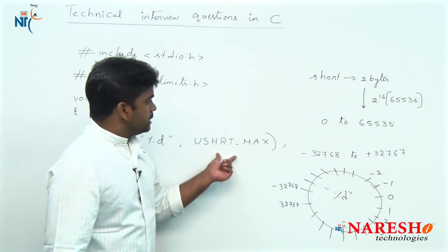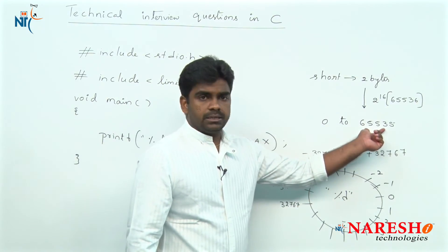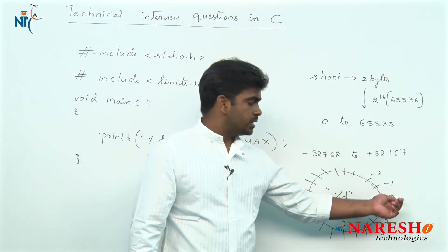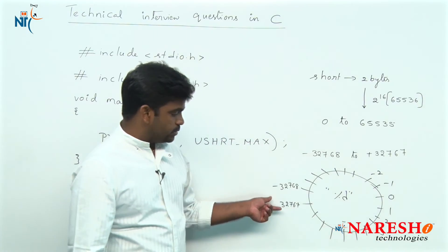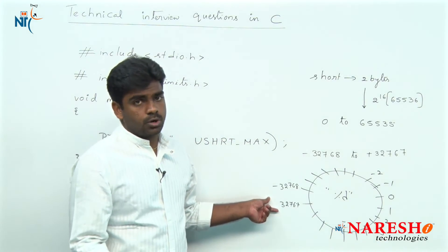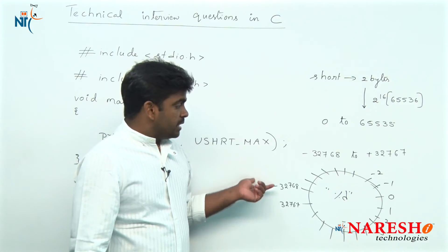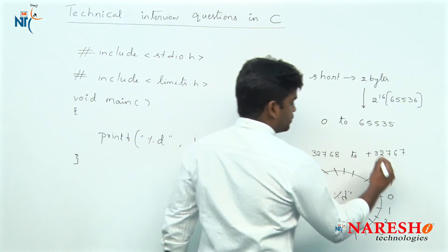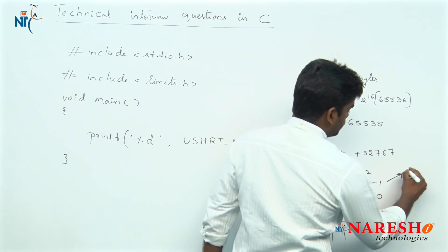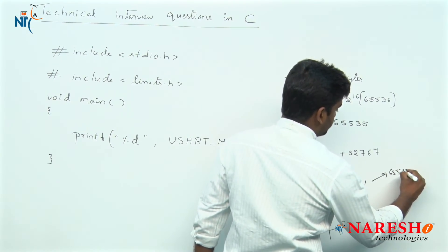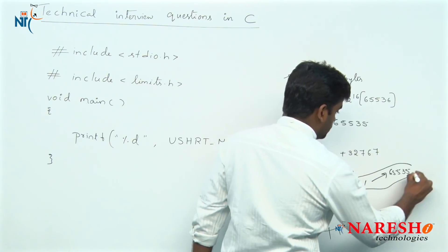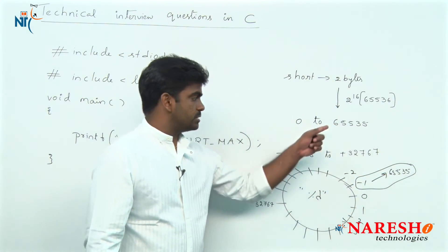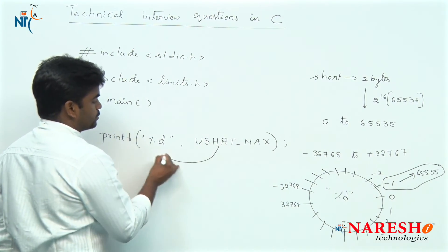It has to print 65,535 but in this circle only it should check. Here it will start counting, 1, 2, 3, 4, 5, 6... 32,767 and it will not stop counting. It will continue 32,768, 32,769 like that. The value 65,535 is equals to minus 1.